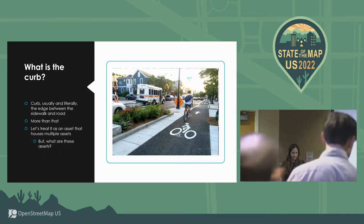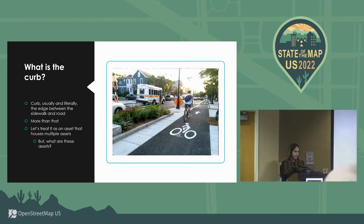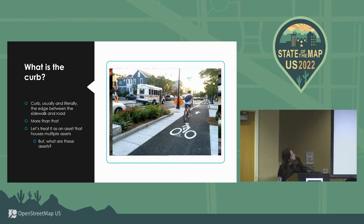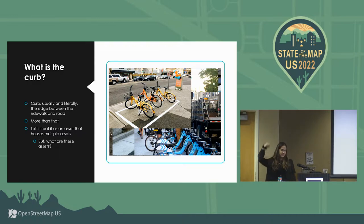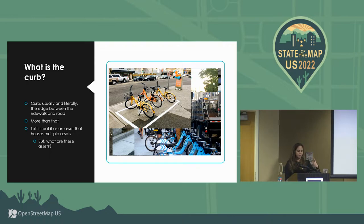That includes mapping bus stops, bike lanes, trees, street parking, bike sharing stations, dockless parking. In Europe you see a lot of covered bike parking within parking slots on the street. So there are different uses of things on the street side of the curb and then on the sidewalk side of the curb.